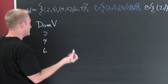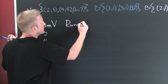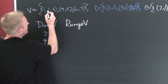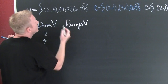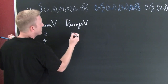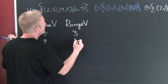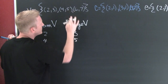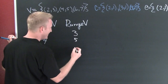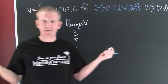Now let's list the range of V. The range is the set of all second elements. In this correspondence that's three and five. Some of you might think of these as the y-values — you can see it that way, that's fine.